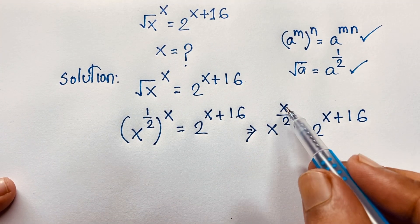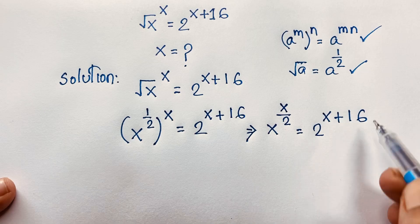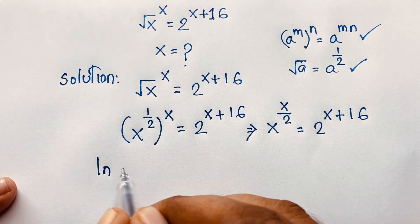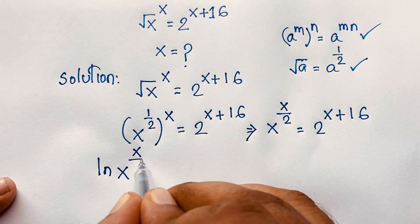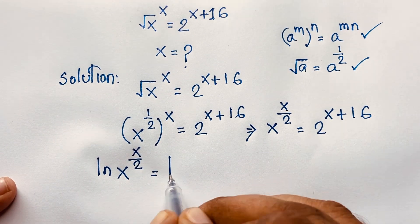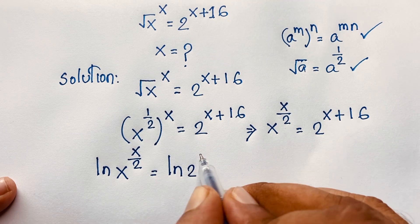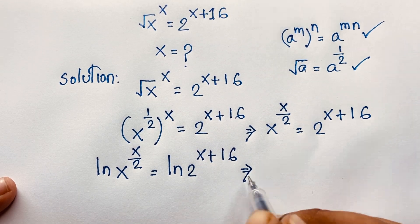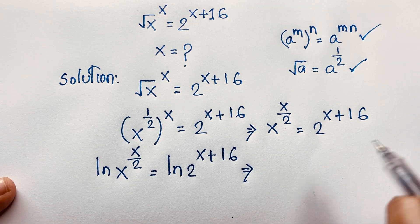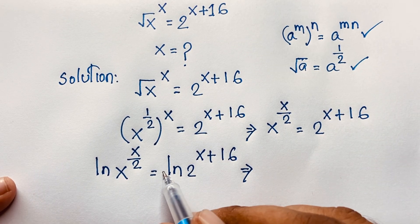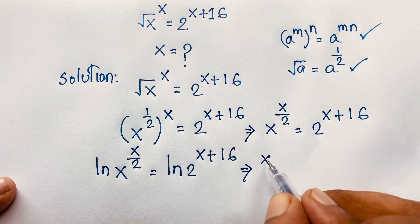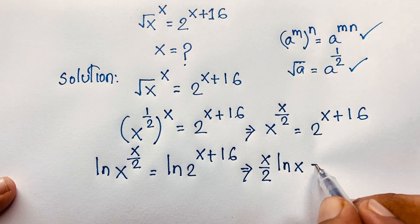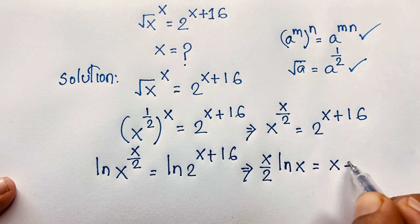Now, here, this is an exponent, so I use natural log on both sides. So: ln of x to the power x over 2 is equal to ln of 2 to the power x plus 16. Then, we know the exponent moves in front, so it becomes x over 2 times ln x is equal to x plus 16 times ln 2.